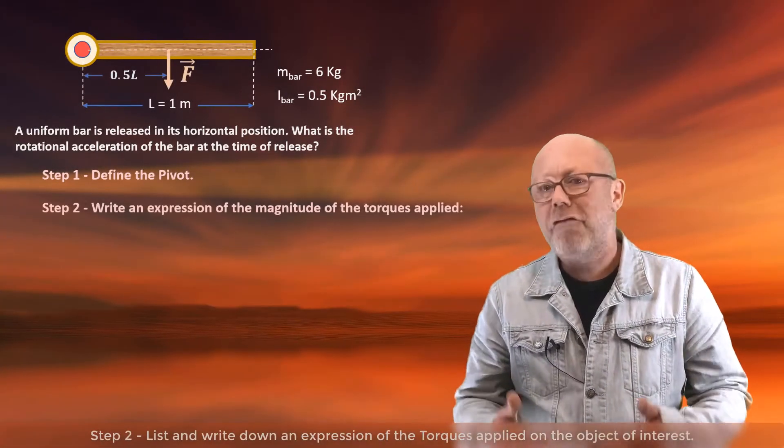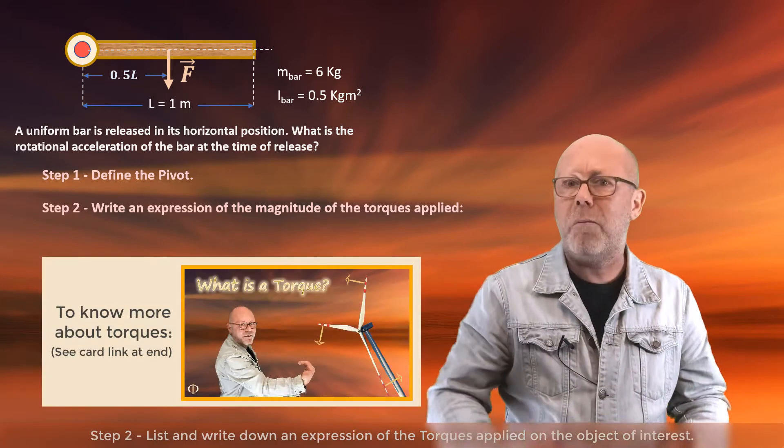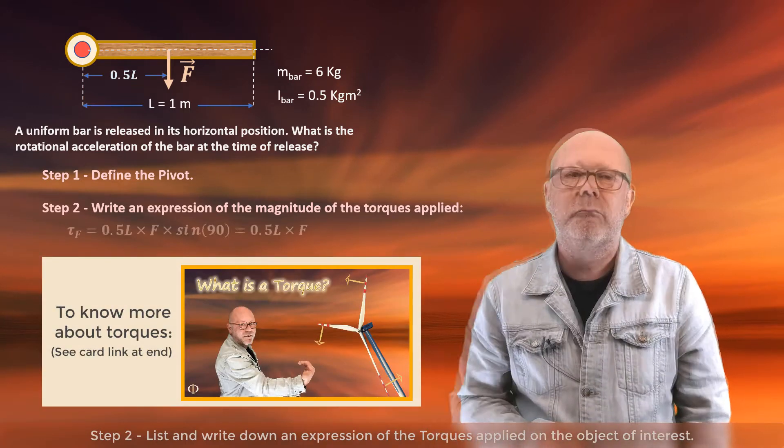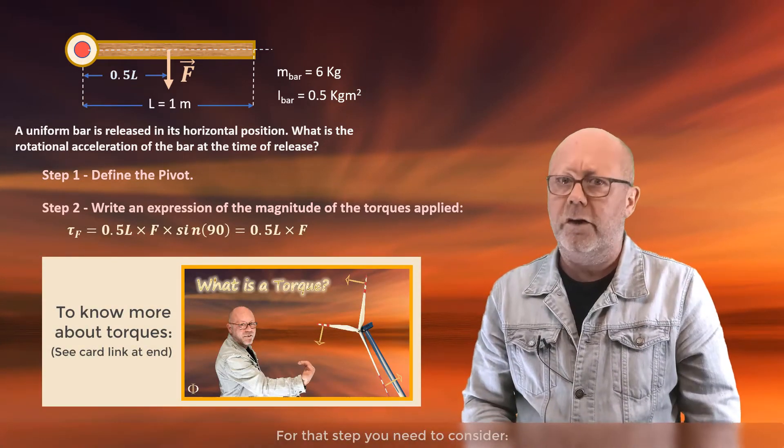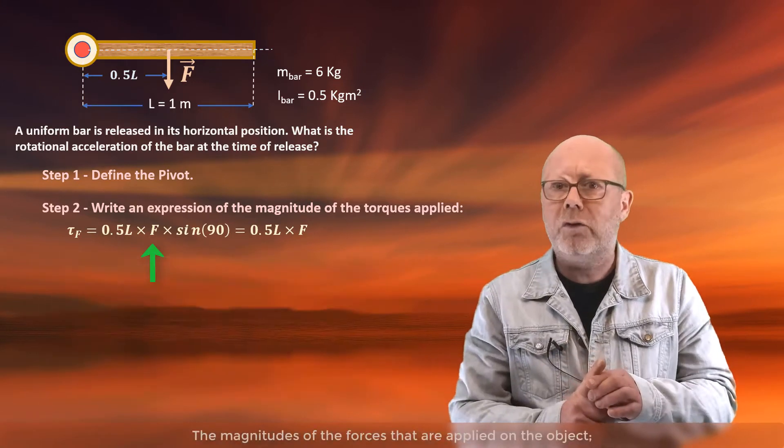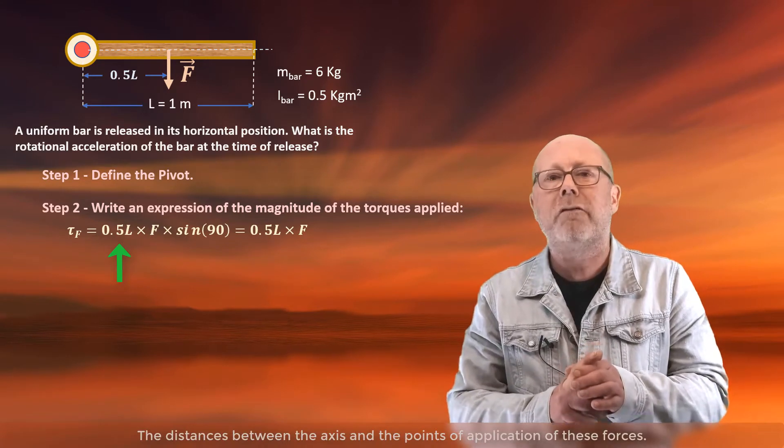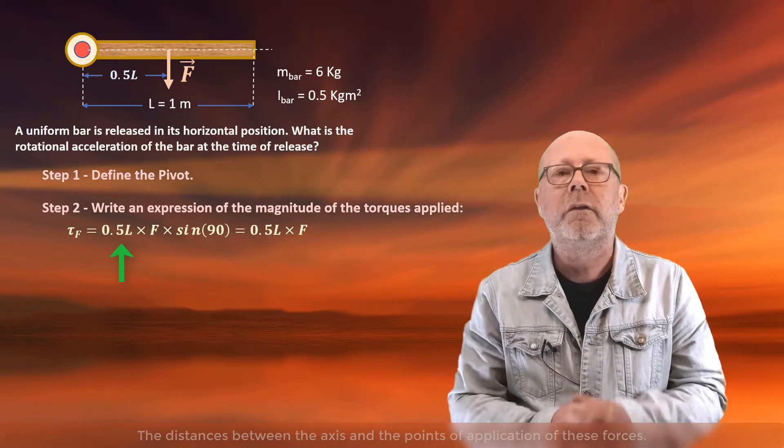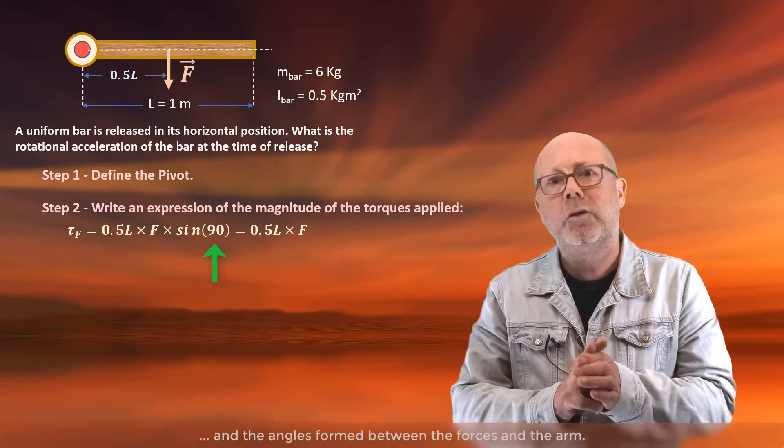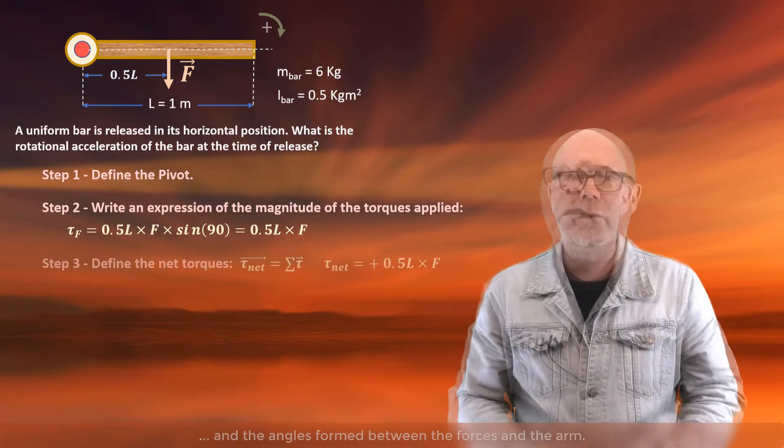Step 2, list and write down an expression of the torques applied on the object of interest. For that step, you need to consider the magnitudes of the forces applied on the object, the distances between the axis and the point of application of these forces, and the angles formed between the forces and the arm.